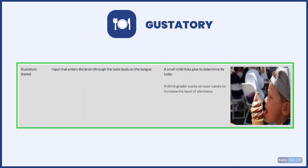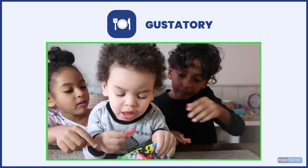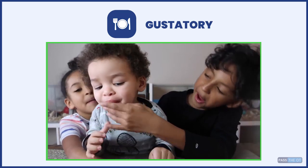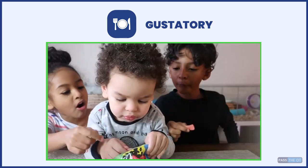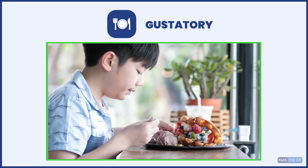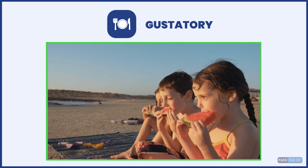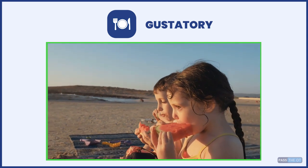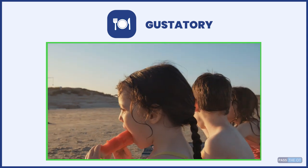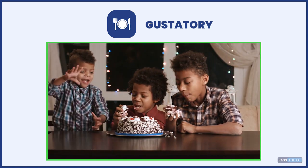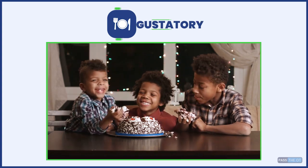Gustatory is taste — think of gum. An example is a child licking chocolate vanilla ice cream, or the taste of sour candy that can increase alertness. You might also give someone a taste of their favorite food, like chicken and waffles, to help spark memory after a coma. Gustatory input is received on the tongue through taste buds and enters the brain that way.